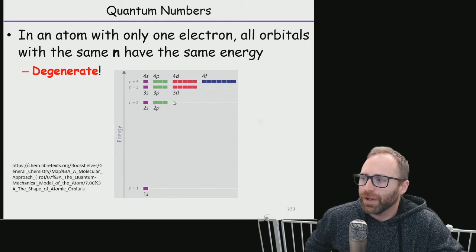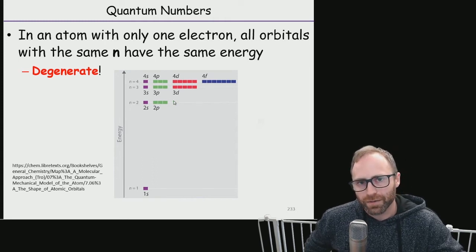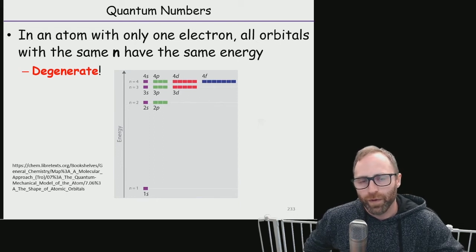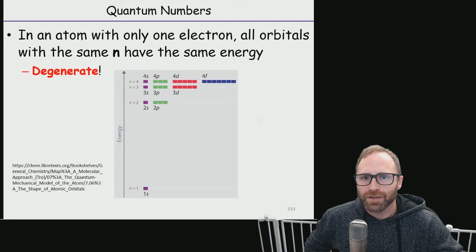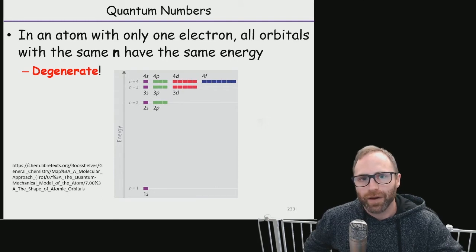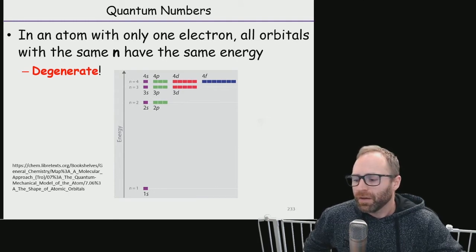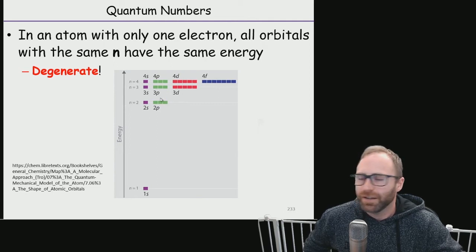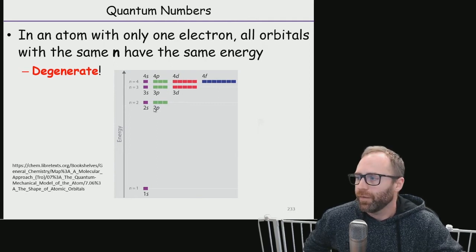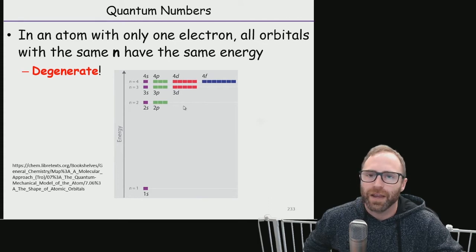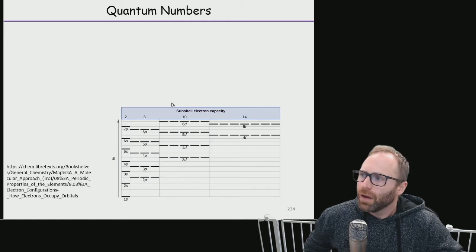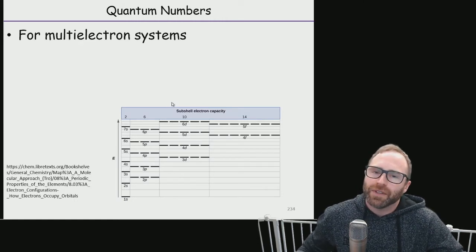We talked about the p orbitals having all the same quantum numbers, and it's really just that angular momentum, the m sub l quantum number, that is giving us the difference in the orientation in space. What happens if you have a multi-electron system, like every other atom on the periodic table besides hydrogen?